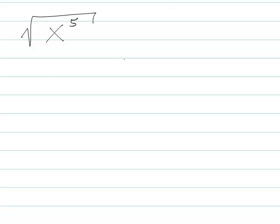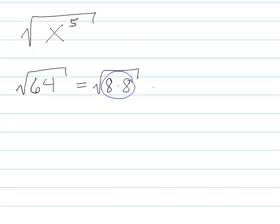Let's look at a numerical example. What's the square root of 64? If I factor out 64, I get 8 times 8. So there's a pair of 8's right here. Every pair of 8's I can take out and only have one 8 left. So this pair will join forces and become just one 8.